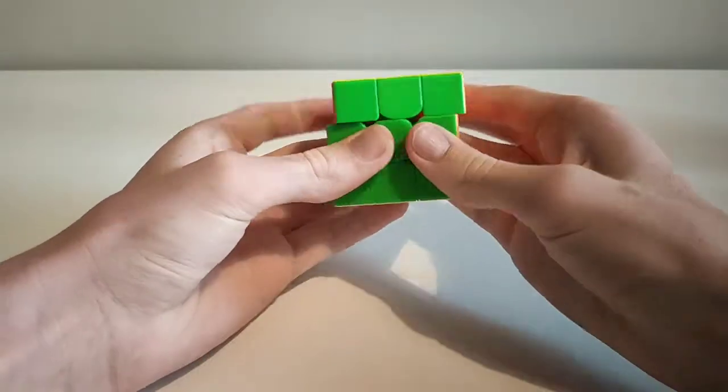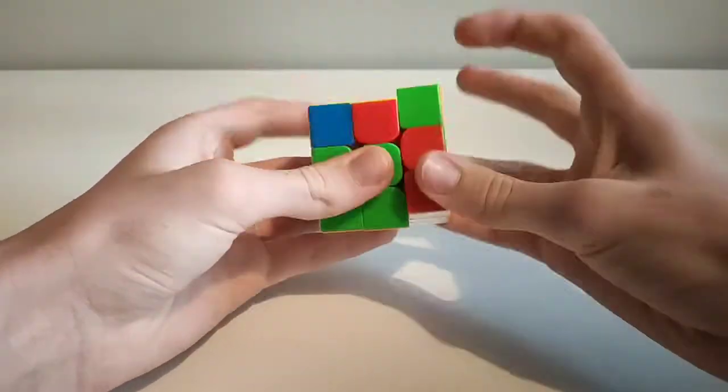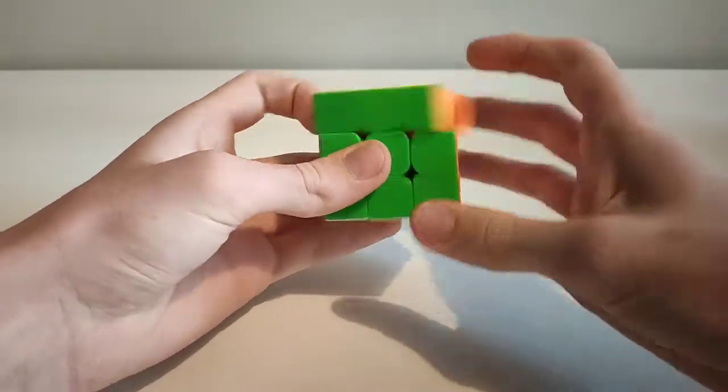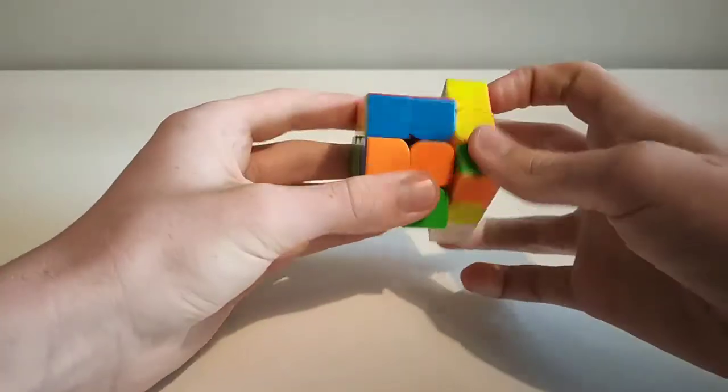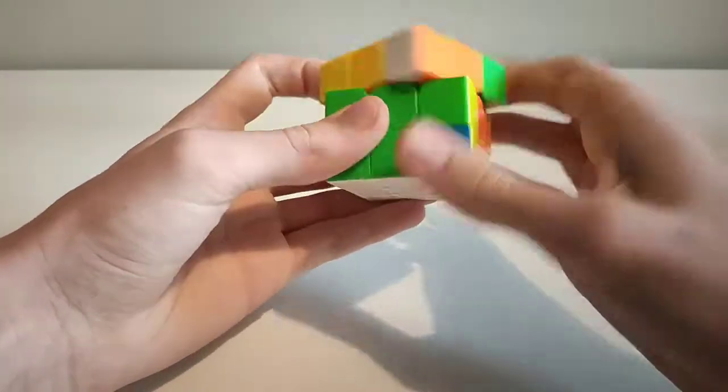Next up we have lubical speedy. Lubical speedy does what you would expect it to, make the cube faster. However, it does not make it as fast as some of the water-based lubes do, and it makes it a bit smoother than they do. So the effect is slightly less pronounced speed that lasts longer.